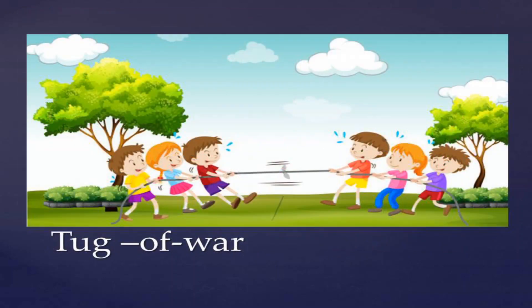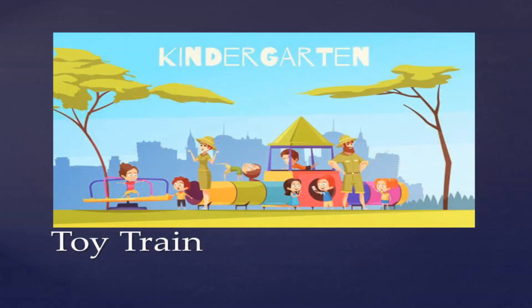The girl is sitting on a swing and is swinging. You could find a rope in the center being caught by three children from one side and three children from the other side. This type of play of pulling the rope to see who would win is called tug of war. And then you have the toy train here.